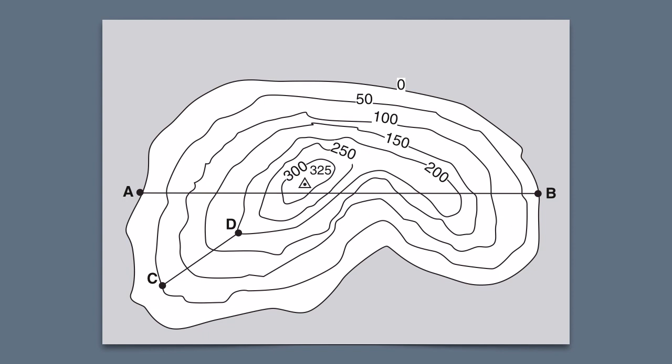Each of these lines is called a contour line, and it shows the elevation of that particular spot on the island. So for example, if you were standing at point D on this map, you would be at an elevation of 200 feet above sea level.